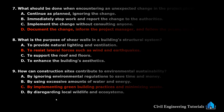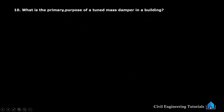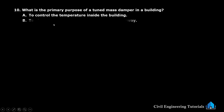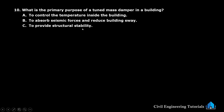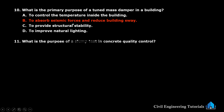Question number 10: what is the primary purpose of a tuned mass damper in a building? Option A: to control the temperature inside the building. Option B: to absorb seismic forces and reduce building sway. Option C: to provide structural stability. Option D: to improve natural lighting. The answer is: to absorb seismic forces and reduce building sway.